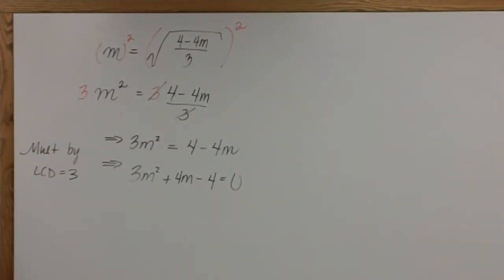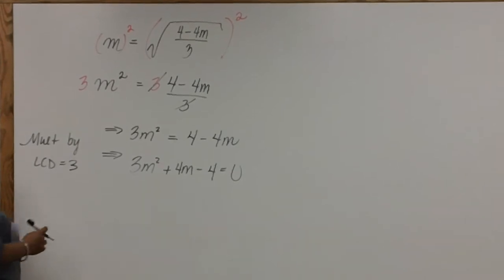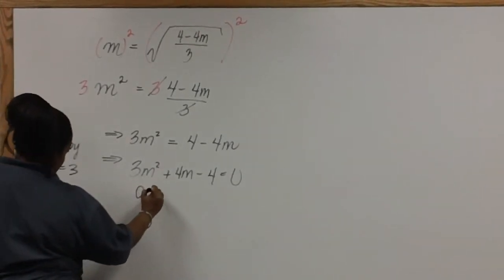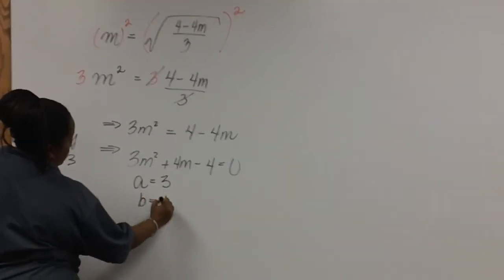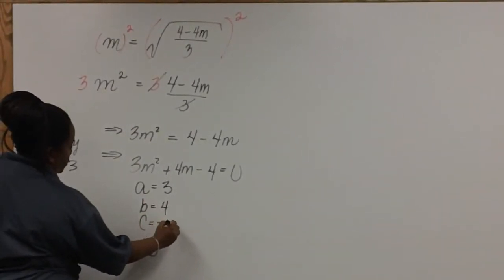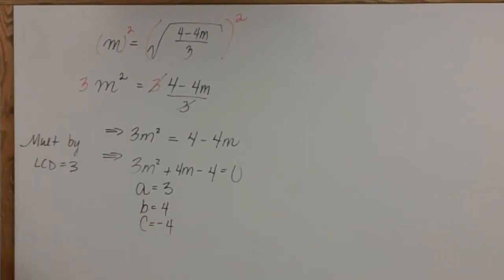Now that the equation has been set equal to zero, we find that A is 3, B is 4, and C is negative 4.